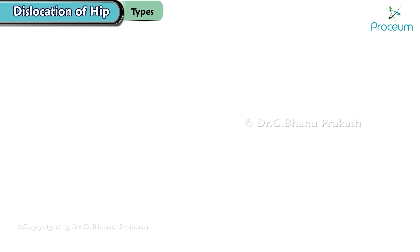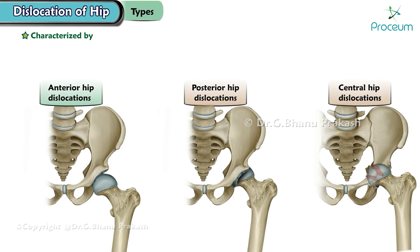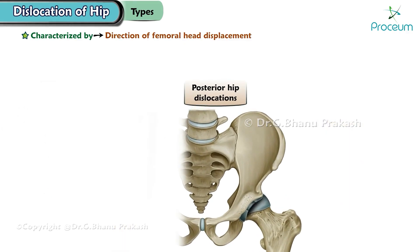Types of hip dislocation. Hip dislocations can be categorized into three main types, each characterized by the direction in which the femoral head is displaced. Among the different types, posterior dislocations are the most common, comprising approximately 90% of all cases.